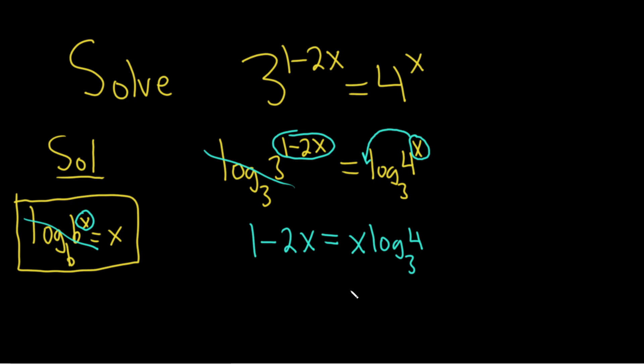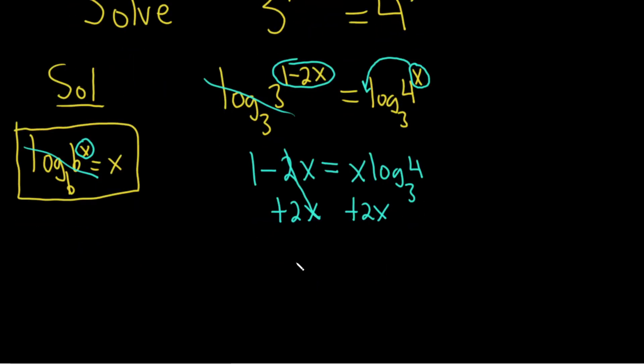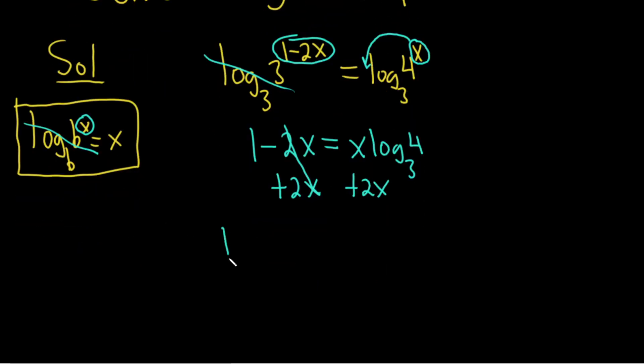Okay, we're looking for x, so we need to get all of them on one side. So you could subtract this, but I don't want two negative signs. So I'm going to add the 2x to both sides, so we have x's all on one side together. So this is 1 equals 2x plus x log base 3 of 4.